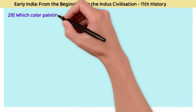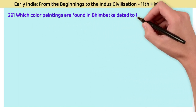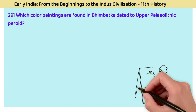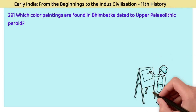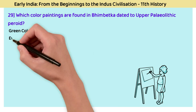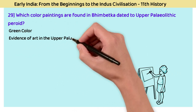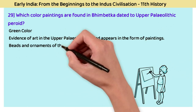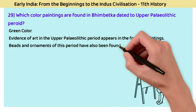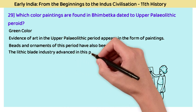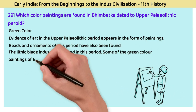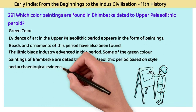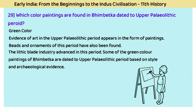Question 29: Which color paintings are found in Bhimbetka dated to the Upper Paleolithic period? The answer is green color. Evidence of art in the Upper Paleolithic period appears in the form of paintings, beads, and ornaments. The lithic blade industry advanced in this period. Some of the green color paintings of Bhimbetka are dated to the Upper Paleolithic period based on style and archaeological evidence.